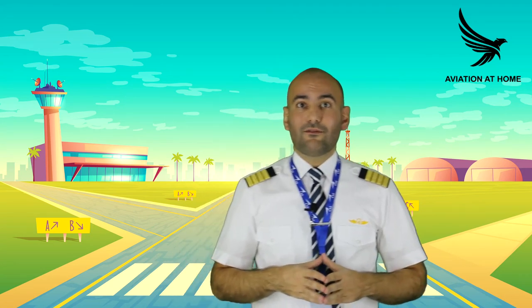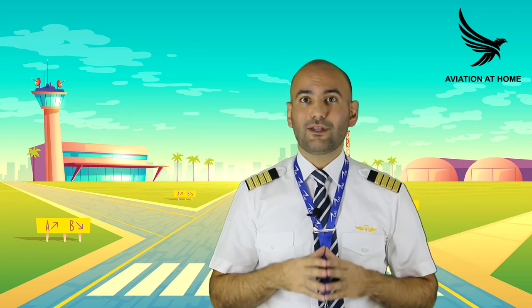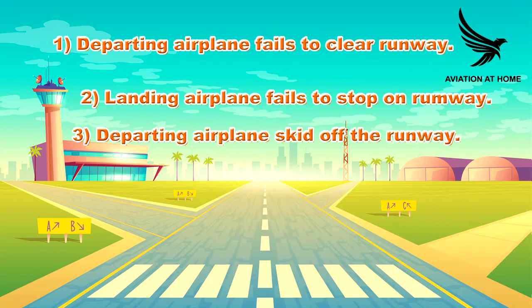On the other hand, runway excursion is the failure of a pilot to stop the aircraft on the runway for any reason. The most common runway excursion types according to reports until 2016 are: one, a departing aircraft fails to become airborne or successfully reject the takeoff before reaching the end of the runway; two, a landing aircraft is unable to stop before the end of the runway.